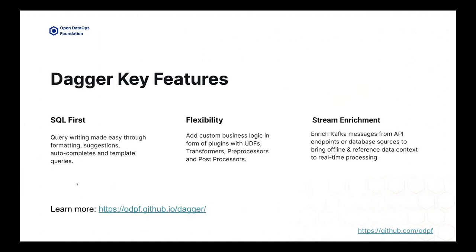Let's talk about certain key features, focusing on the ones that help feature transformation. First, Dagger is completely SQL-first — it makes writing queries in SQL format easy, using suggestions, formatting, and template queries. It is quite flexible: even though it's SQL-first, there are still various ways to extend its functionality by writing UDFs, transformers, processors, and post-processors. And then there is stream enrichment: instead of just pulling data from core sources, Dagger can asynchronously talk to external data sources and enrich that data in between.